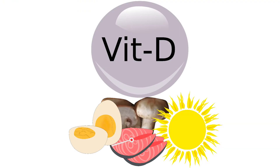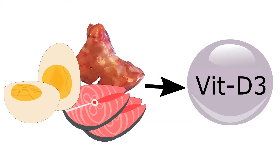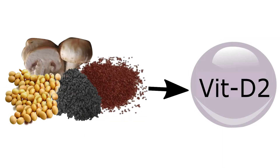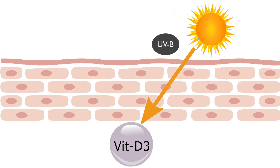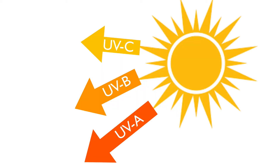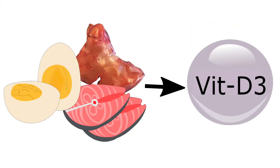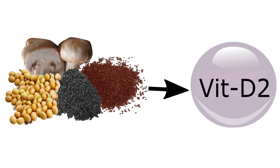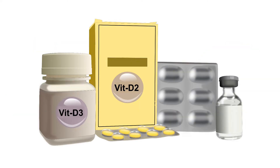Vitamin D is a fat-soluble vitamin. It exists in two forms: vitamin D3 and vitamin D2. D3 is mainly produced by the skin on exposure to UVB rays from sunlight. UVB, known as ultraviolet B rays, is one of the three types of sun rays. You can also get small amounts of D3 from non-vegetarian foods. Vitamin D2, however, is present in a few vegetarian foods. Supplements of both D2 and D3 are available in the market.